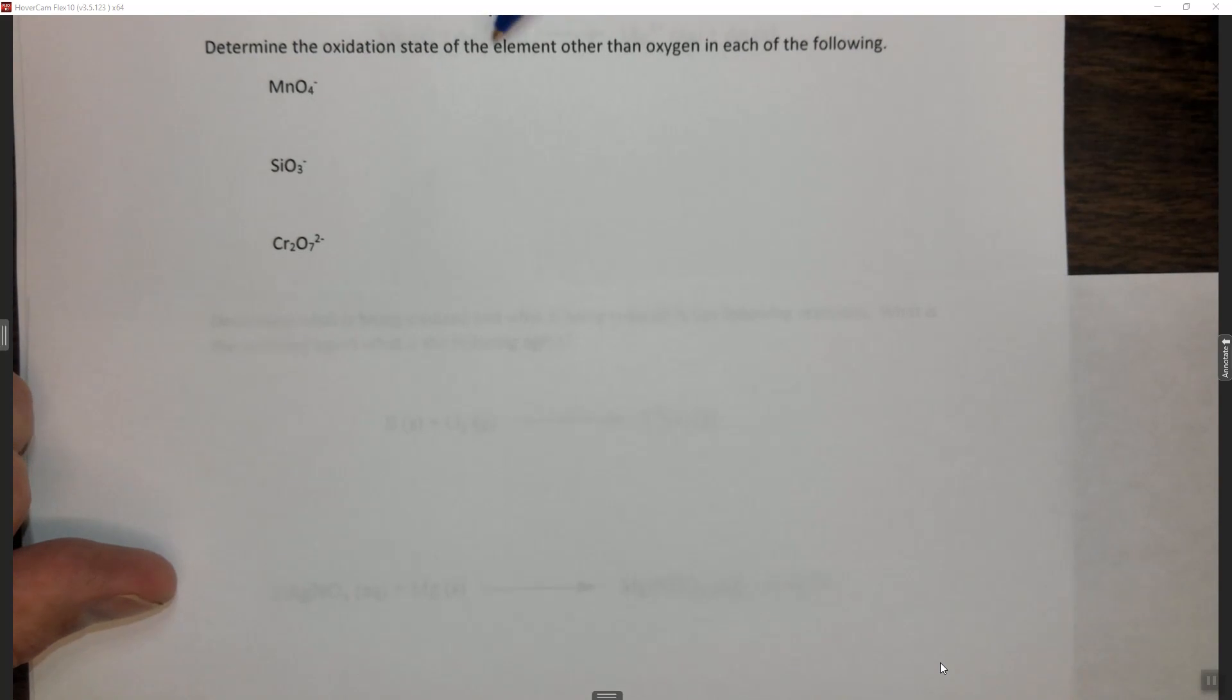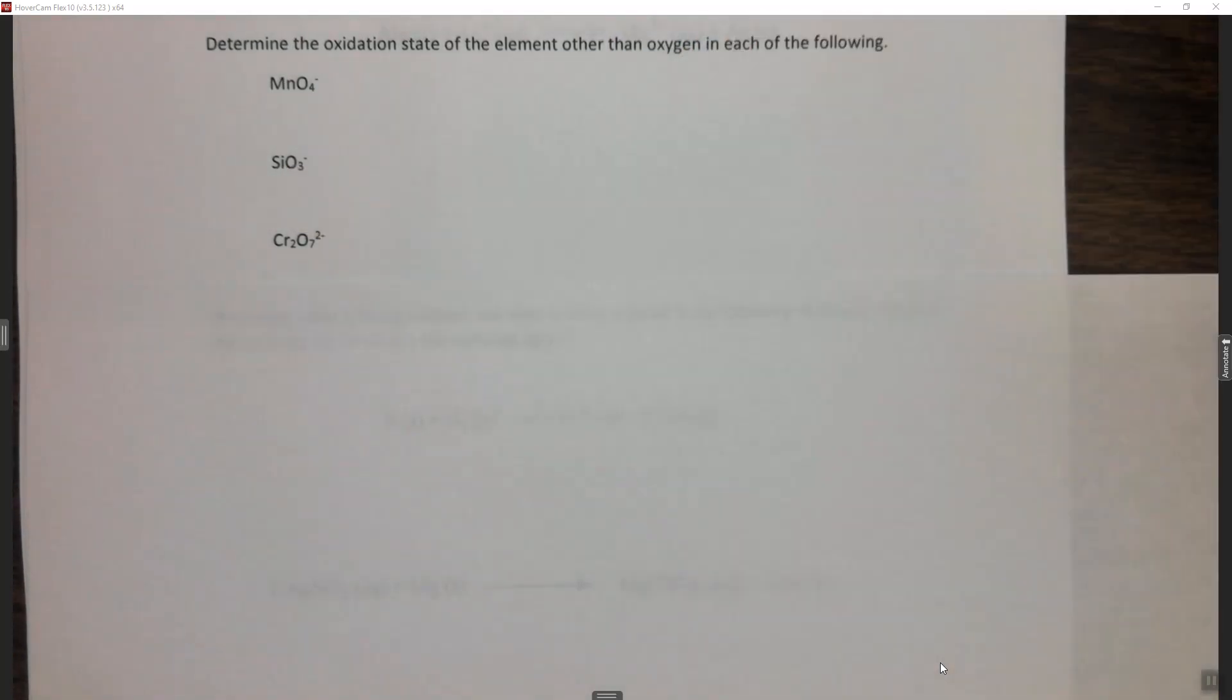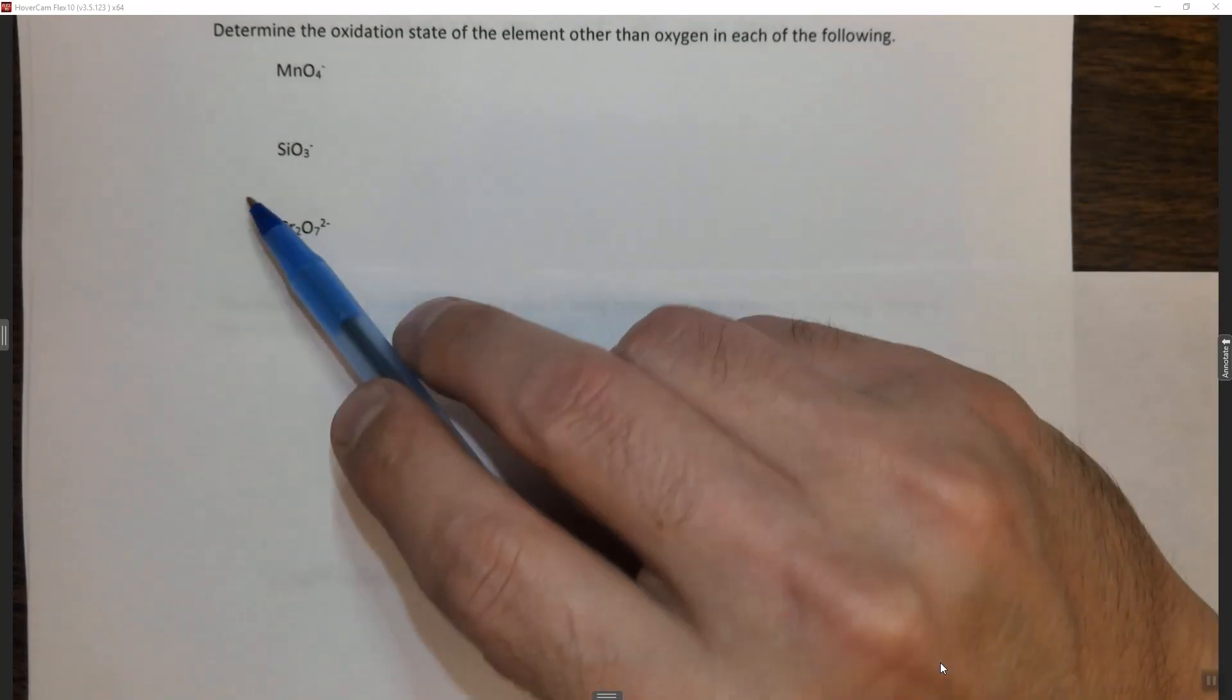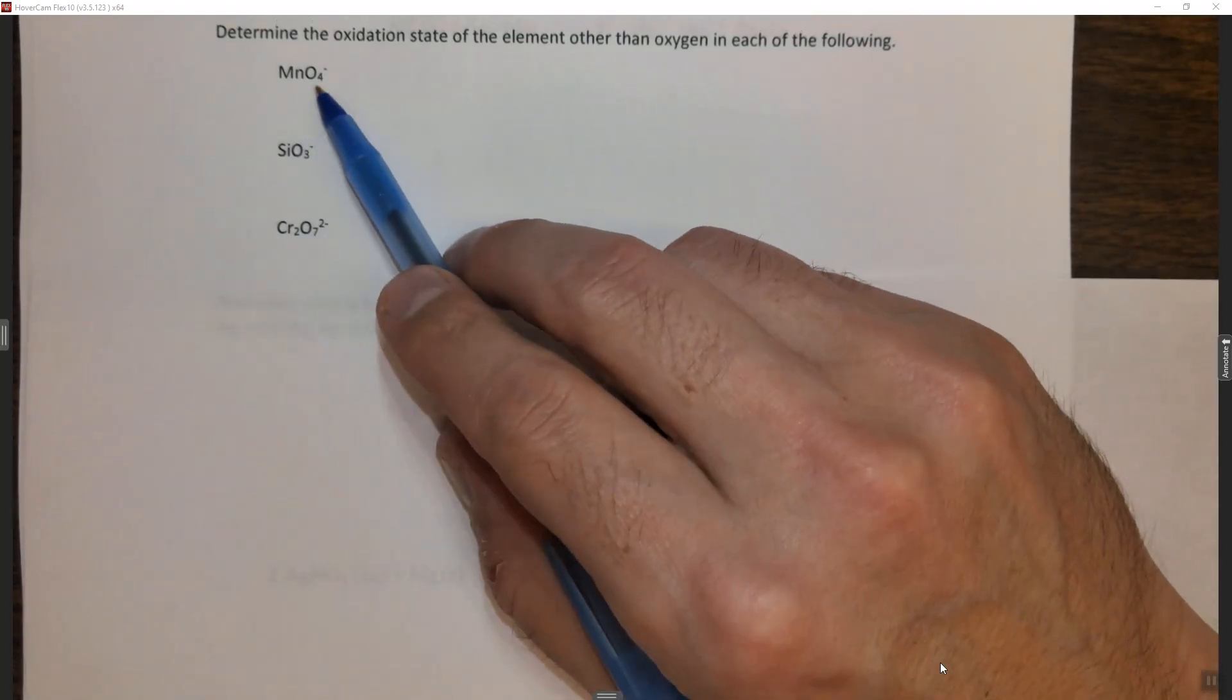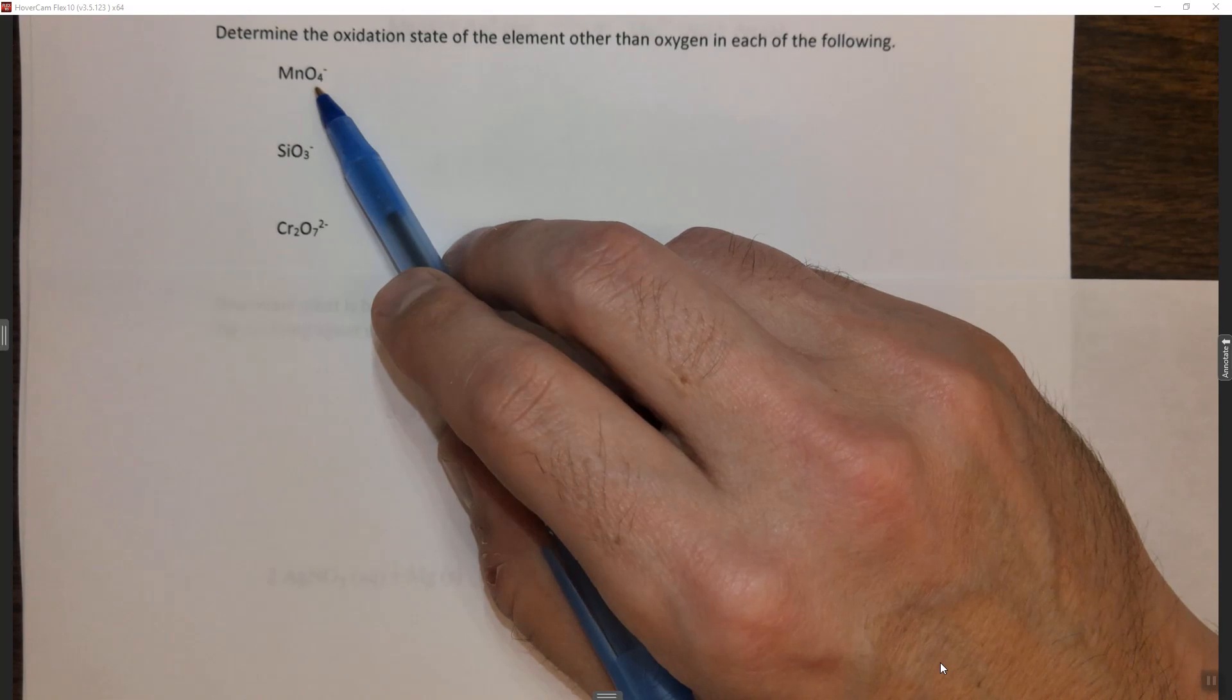So this question says, determine the oxidation state of the element other than oxygen in each of the following. It's important to remember that in compounds the oxidation state of oxygen is minus two. If it's elemental oxygen O2, the oxidation state is zero, but in this case all the oxygens are in compounds. It's also important to remember that the sum of the oxidation states equals the charge. So essentially we need to set up an algebra formula.